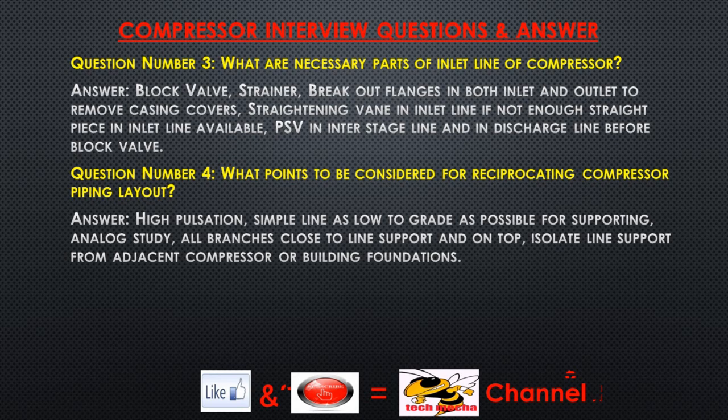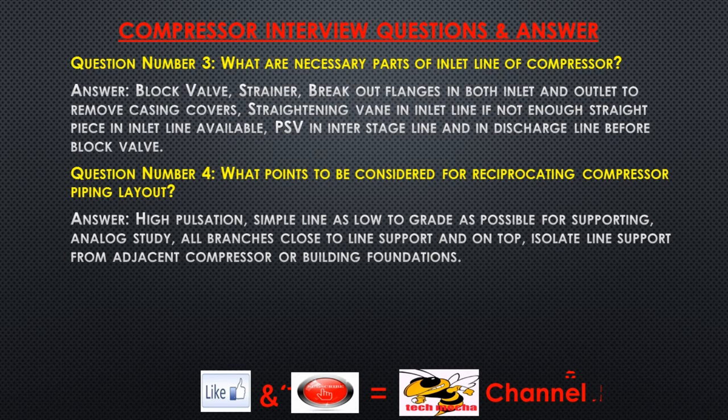Question number 4: What points should be considered for reciprocating compressor piping layout? Answer: High pulsation, simple line as low to grade as possible for supporting, analog study, all branches close to line support and on top, isolate line support from adjacent compressor or building foundations.